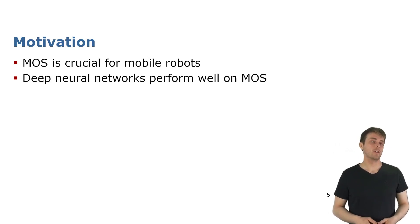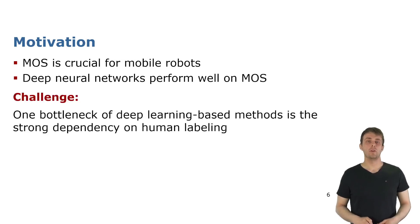In general moving object segmentation is a crucial capability for mobile robots to perform tasks like collision avoidance, predicting future states of the environment, for planning or for building static maps. There exist already a lot of deep neural networks that perform well on this task however most of them share one bottleneck which is the necessity of having labeled training data. We have a large amount of publicly available LiDAR datasets out there but a lot of them are either not labeled in terms of moving objects or have limited labels. But since labeling is a tedious process we want to find a way to automate this.